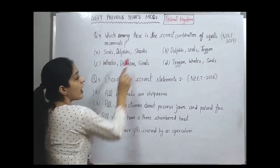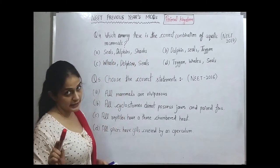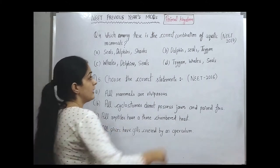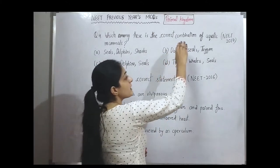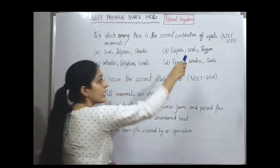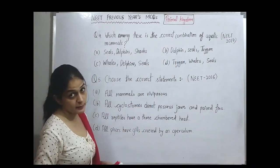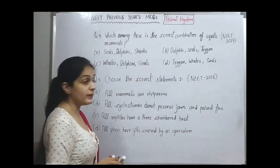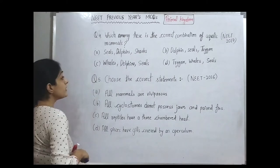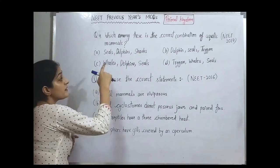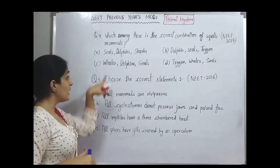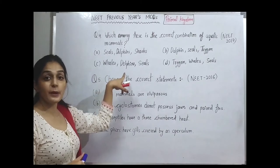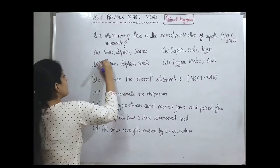Looking at the options: seals and dolphin with shark — shark is not a mammal, it is a fish. Another option includes trigon (sting ray), which is also a fish, not a mammal. The correct combination is dolphins, seals, and whale — all of which are aquatic mammals. Option number C is correct.